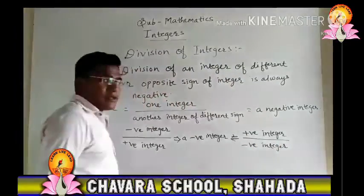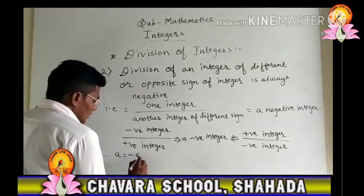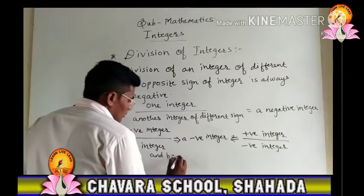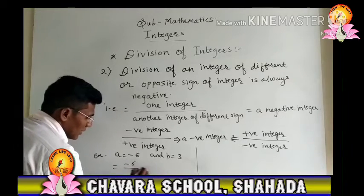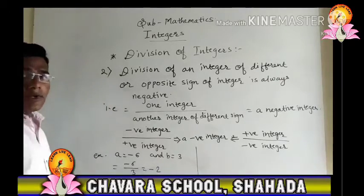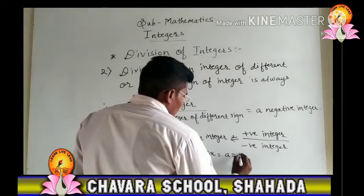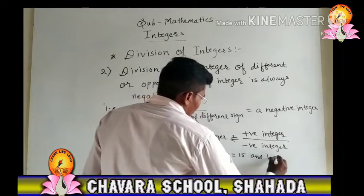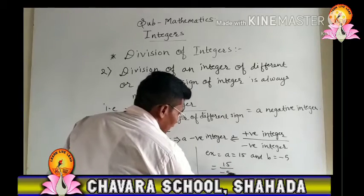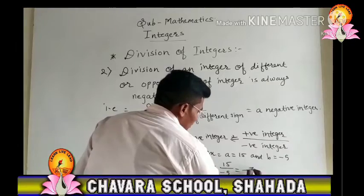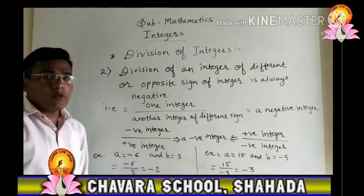The answer of both types is a negative integer. For example, a equals negative 6 and b equals positive 3. So negative 6 divided by positive 3 gives negative 2 — a negative integer. And for the second type, a equals 15 and b equals negative 5. So 15 divided by negative 5 equals negative 3. From both examples, you can understand the rules, and hence the rules are proved.